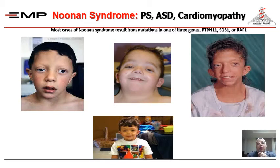Noonan syndrome — these patients have pulmonary stenosis, ASDs, and cardiomyopathy. Look at the patients — I have many pictures for you. You see that in syndromes, they look quite alike. This is a picture from the internet and this is one of our patients.